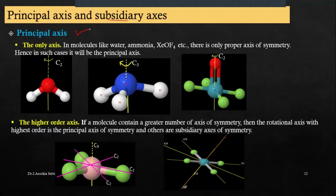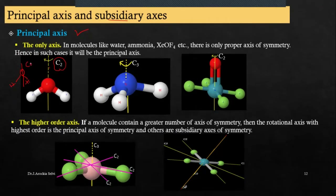So when do we call something the principal axis? If the molecule has only one axis and no other axes are present, that is the principal axis. For example, water has C2, and that C2 is the only axis — so C2 is the principal axis.